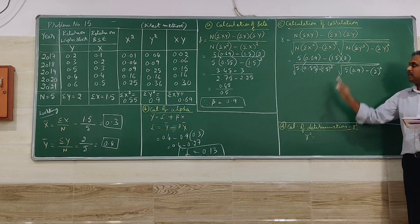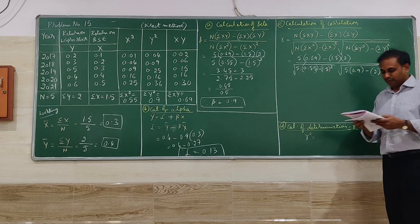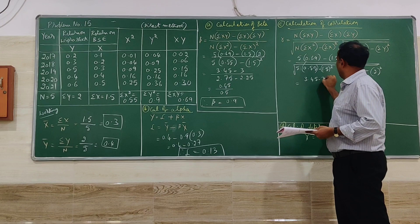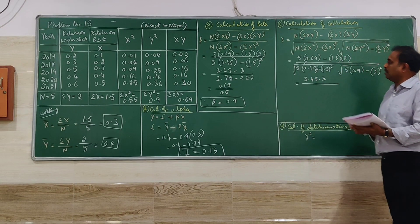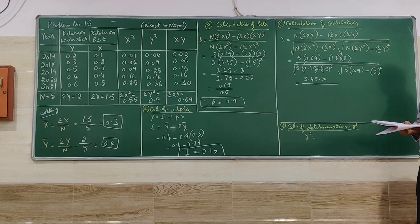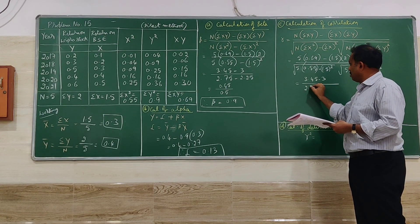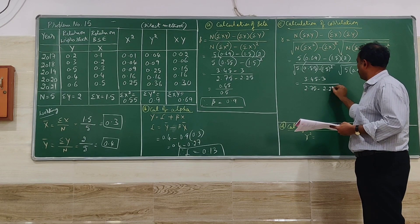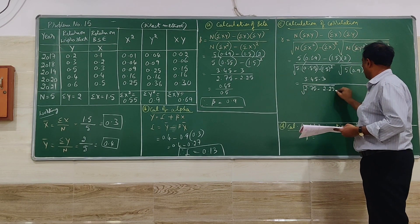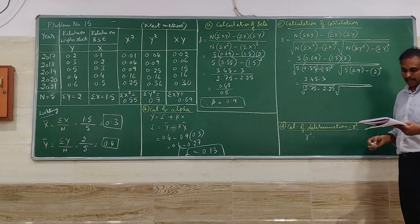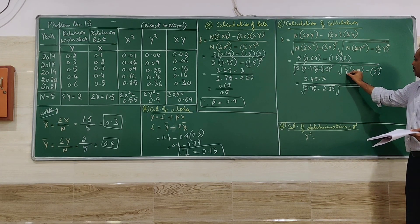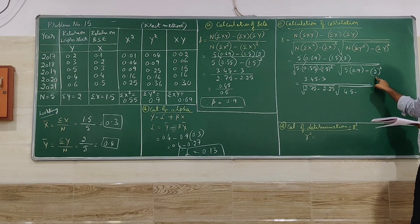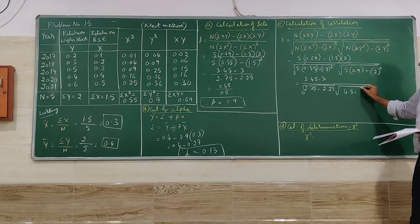So here simplification we have to be very careful. I will look for simplification. Further, we will be having here 2.75 minus 2.25 square root. Again multiplied by 5 into 0.9 minus 2 square is 4.